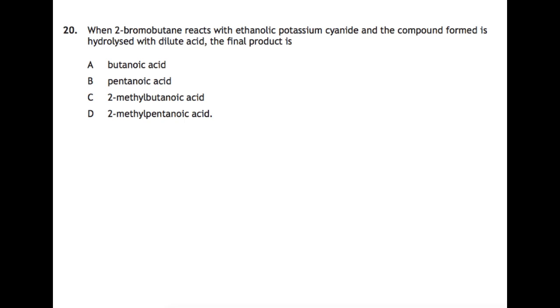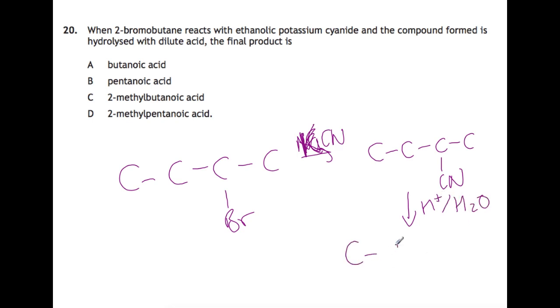And finally, question 20. When 2-bromobutane reacts with ethanolic potassium cyanide and the compound formed is hydrolyzed with dilute acid, the final product is what? Let's draw out 2-bromobutane and see what happens to it. So here is butane. Here's the 2-bromo. If we react that with potassium cyanide, it doesn't really matter because that is just the counter ion. We will replace the bromine with the CN. So we formed a nitrile. And if we hydrolyze that with acid and water, then we will produce a carboxylic acid. And then it's just up to us to name it. We've got 1, 2, 3, 4. So that's butanoic acid. And on the second carbon, we have a methyl. So that's 2-methylbutanoic acid, which is C.